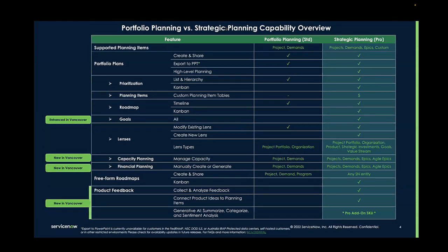Capacity planning is now included in both the standard and pro versions of our planning workspace, with the pro version giving you the ability to do capacity planning across more work items, including epics and agile epics, while the standard version lets you do capacity planning across projects and demands.